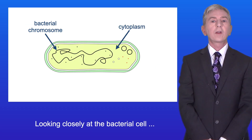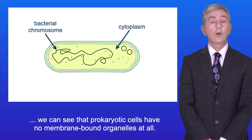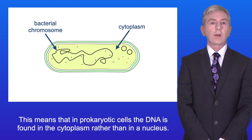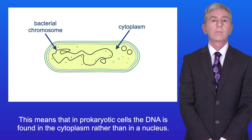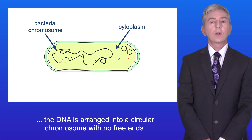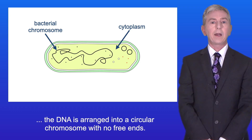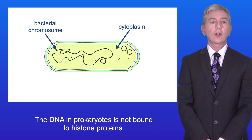Looking closely at the bacterial cell, we can see that prokaryotic cells have no membrane-bound organelles at all. This means that in prokaryotic cells the DNA is found in the cytoplasm rather than in a nucleus. In prokaryotic cells the DNA is arranged into a circular chromosome with no free ends, and the DNA in prokaryotes is not bound to histone proteins.